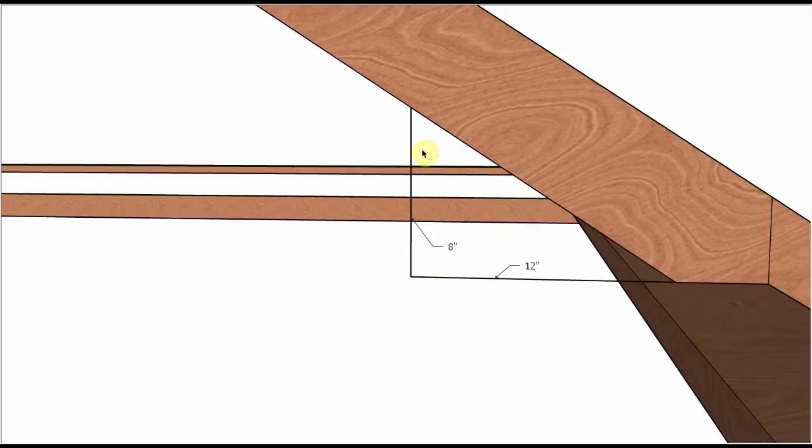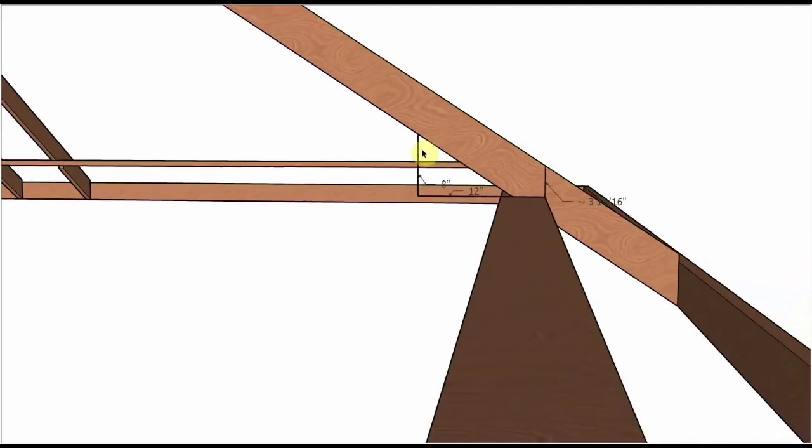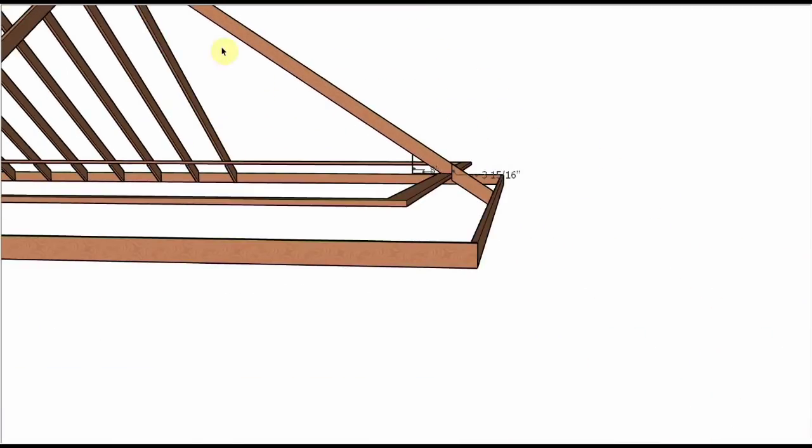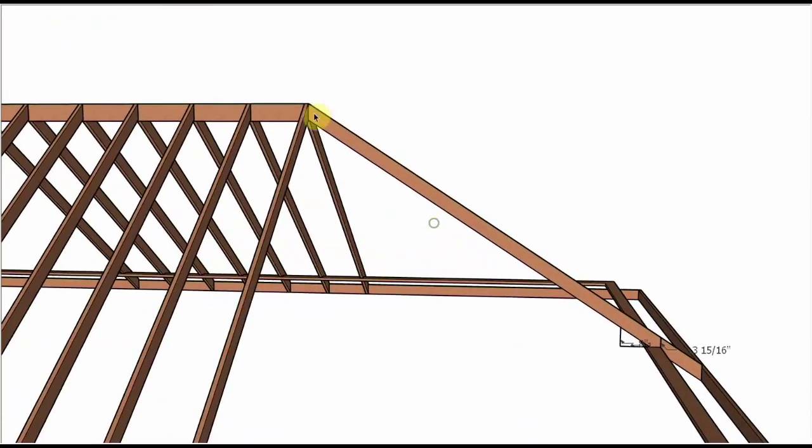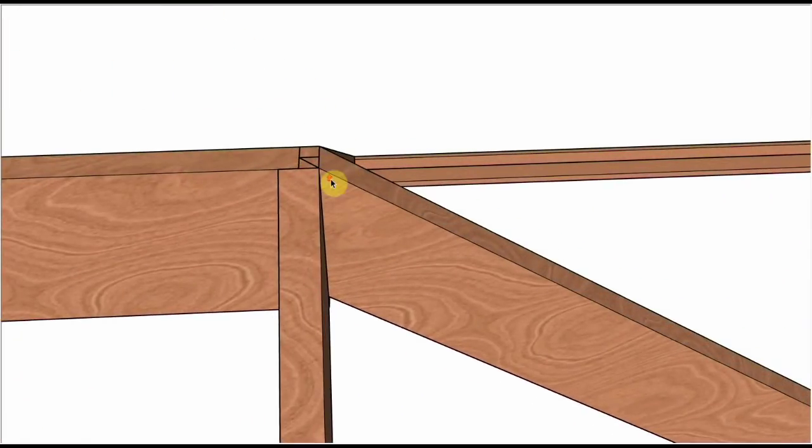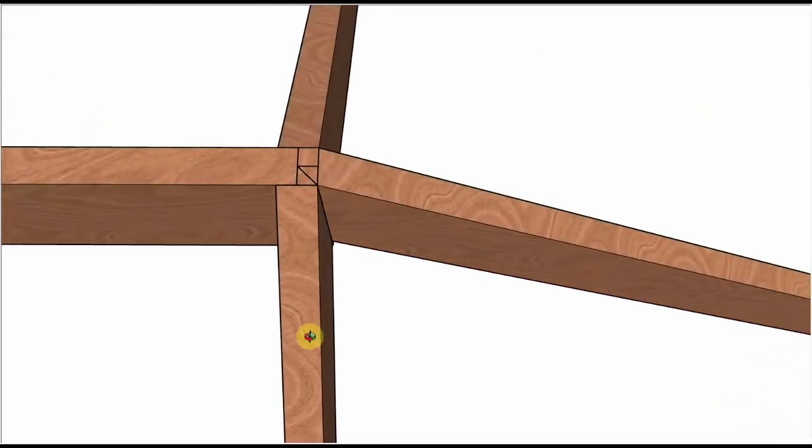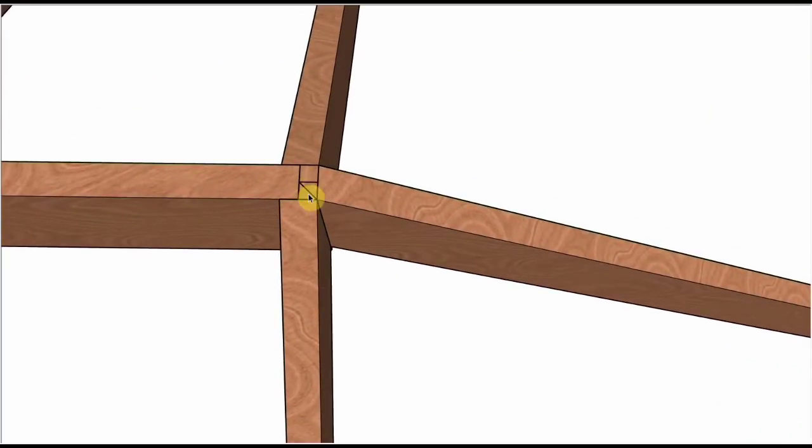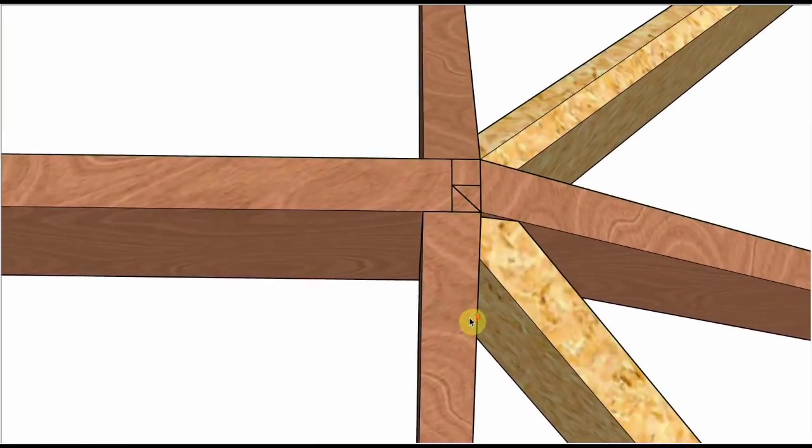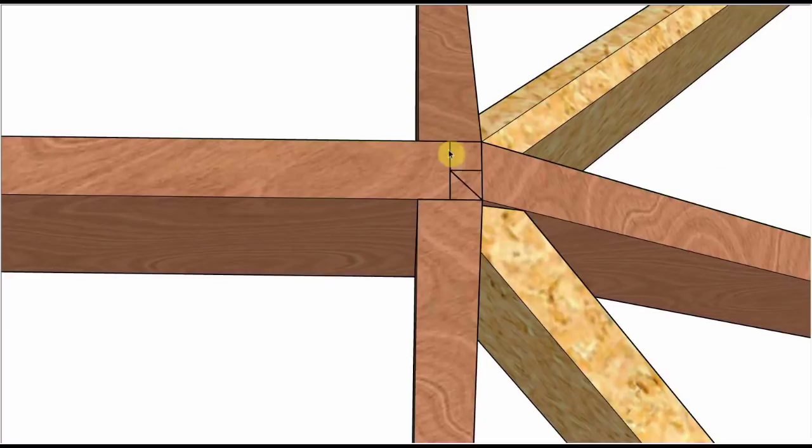That means the common rafters, their slope is when they run 12 inches, they rise 8 inches. So that's 8:12 and it's the same on all four sides. When we lay out a hip rafter at the top cuts, the first thing we lay out is this point here where all the center lines of the rafters meet.